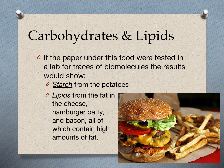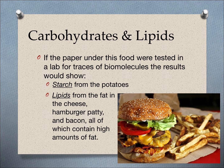One thing that's going to be on the test: if the paper under the food you see on your screen were tested for biomolecules, what would it show? There would be a greasy spot on the paper from the hamburger and french fries. Starch comes from the potatoes — that's the carbohydrate — and lipids would come from the fat in the burger, cheese, bacon, and all that other good stuff. So if the paper were tested, it would show starch, which is a carbohydrate, and it would also show lipids.